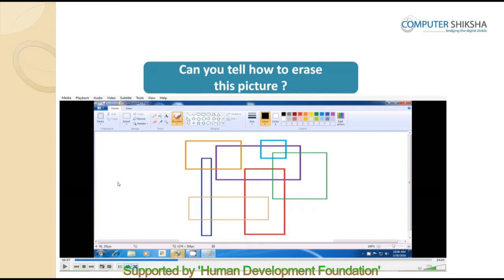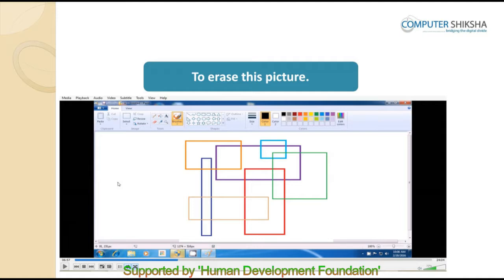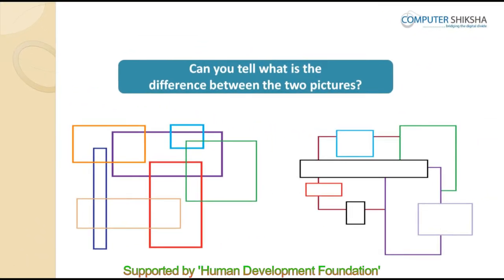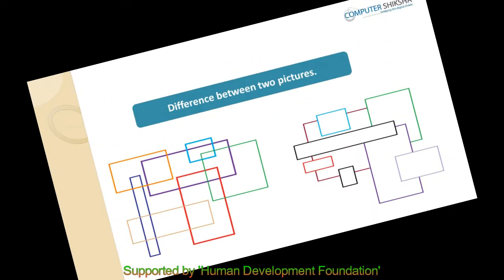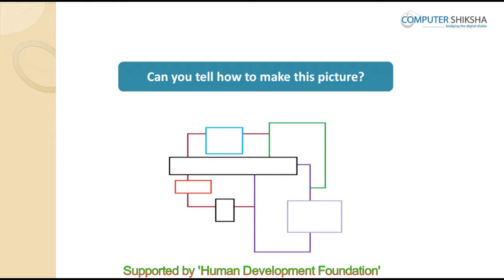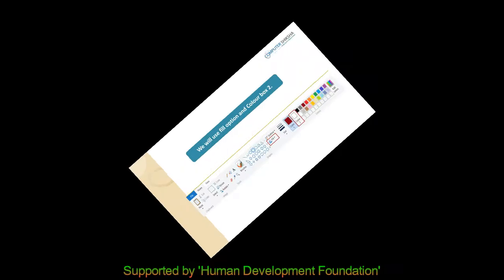Can you tell how to erase this picture? Go ahead and erase it using the method you have already learned. Now look at the picture being shown and tell what the difference is between this and the previous picture. In the previous picture, you made many rectangles. Now look carefully and you will find that this rectangle is filled with white color, and you could also see the lines behind the rectangle. Can you tell how you will make this picture? We will use fill and the color box tool.